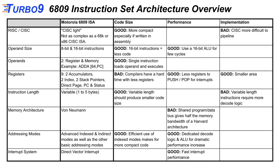Without going deep into 6809 code, let's go over a few key points about the ISA. The most important things for our IP are code size and then performance. Implementation area is probably the most important concern for the implementation itself.